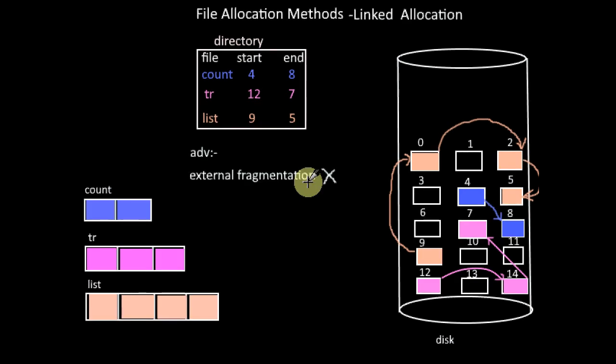Now what are the advantages of this method? Here there is no chance for external fragmentation. As long as there is enough space in the disk, any free disk block at any location can be used to hold the file blocks.